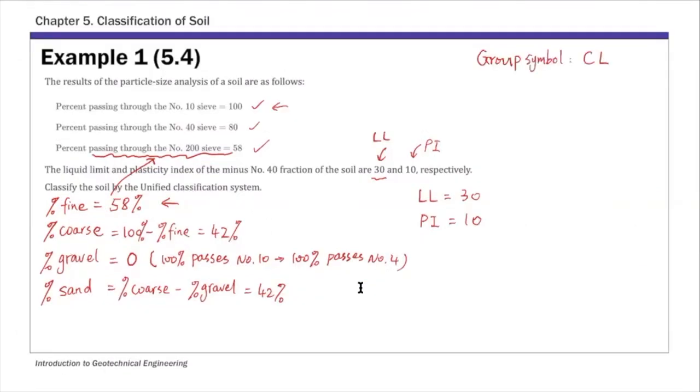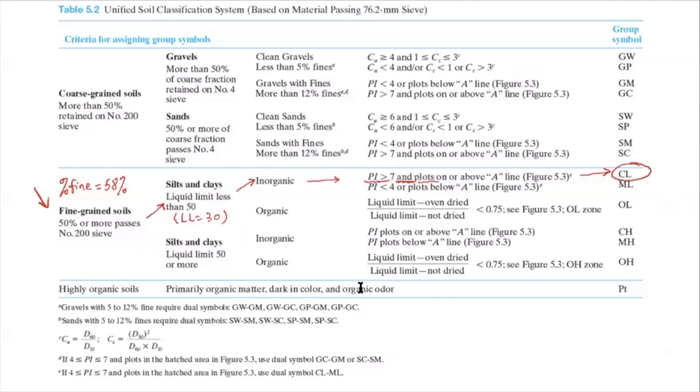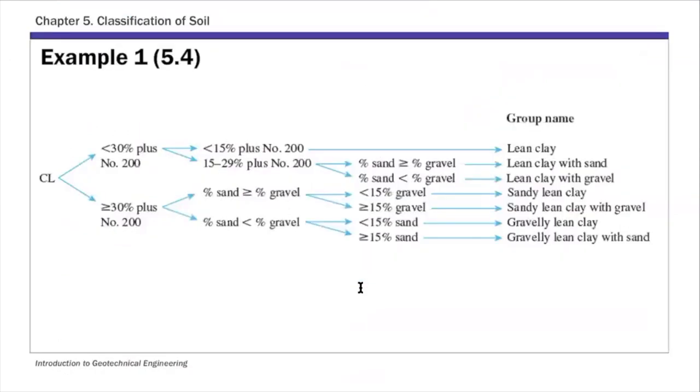Remember, that's just one part of the classification. A complete classification needs both symbol and name. So let's find out the group name. For group name, we're going to use that group name chart. And for this particular soil, we're going to use this figure here. So this is part of that figure 5.4.